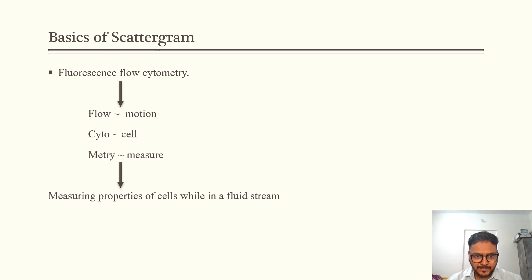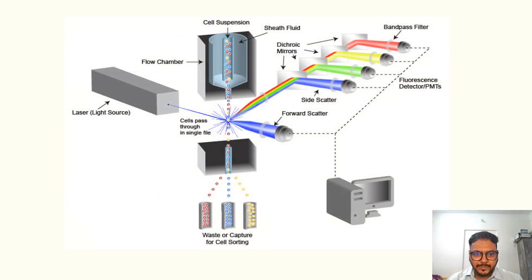As the name indicates, flow means cells in motion. Cyto means cells. Metry is measurement. So fluorescence flow cytometry is basically measuring the properties of cells while in a fluid stream. The components of a flow cytometer are fluidics, optics, and electronics. In fluidics, there is a chamber containing sheath fluid and a separate chamber within that chamber through which cells are made to pass. The sheath fluid focuses the cell in a single streamline manner so that all of the cells pass through the coherent light source which is a laser light. So when the light hits the cell, there is a forward scatter and a side scatter. This scatter is detected by the detectors and then it is transferred to the electronics which generates a scattergram which is interpreted by the pathologist or the hematologist.